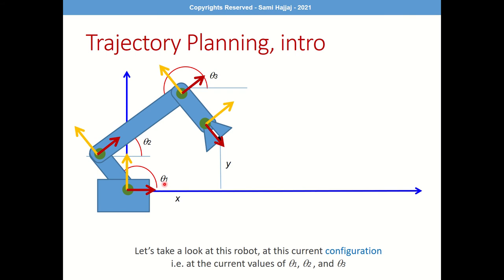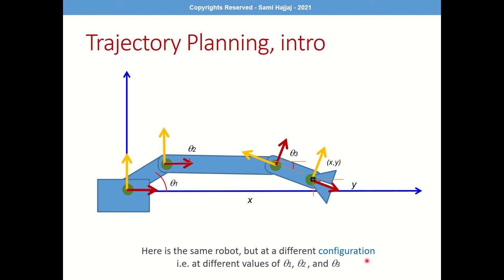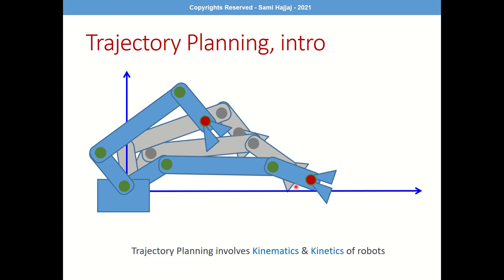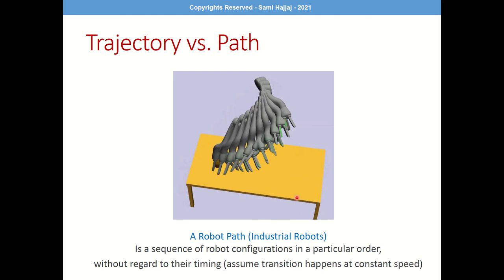We can do forward kinematics — given theta 1, theta 2, and theta 3, find the corresponding pose of the end effector — or inverse kinematics — given the pose, find the joint angles. But the key question is what happens in between when the robot travels between two configurations. This is the study of trajectory planning. It involves kinematics — position, velocity, and acceleration — as well as kinetics, which includes dynamics, forces, and torques.